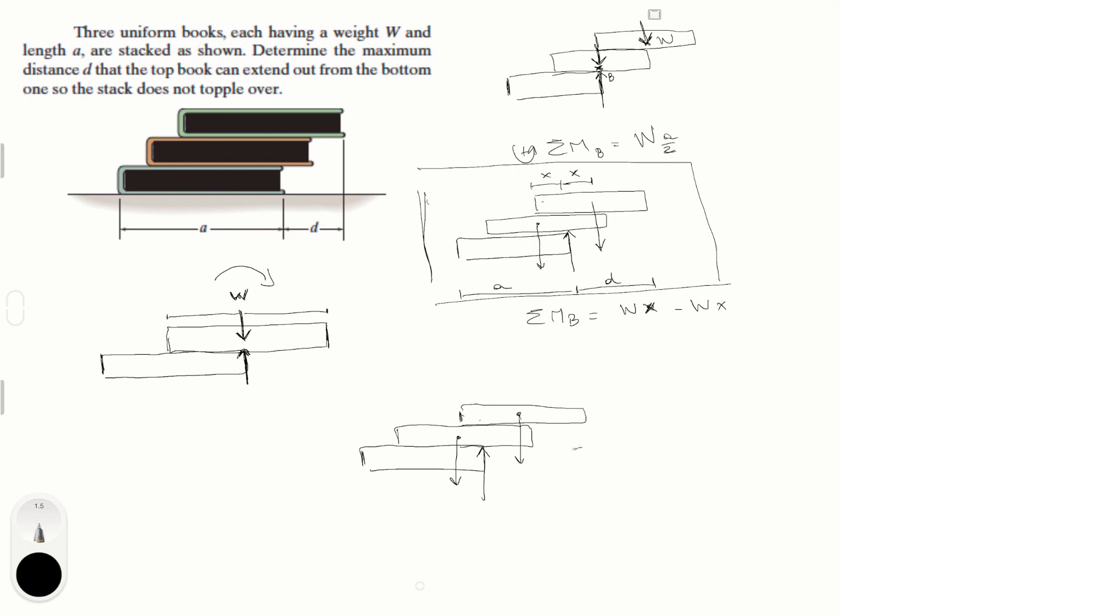That's this weight right here. So, sum of the moments about this point is equal to 0 and is equal to the weight times x minus the weight times this distance right here. You know that it's A over 2, and then the distance from here to here you know that it's x. We're gonna call that x for now. So, it's A over 2 minus x.